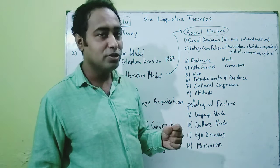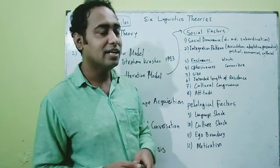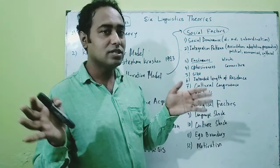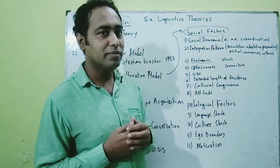The fifth factor is size — the size of the community is also a very important factor. Suppose a learner goes to another community and his home community is very large; then learning becomes unsuccessful. If the size is small — a small group — then learning becomes successful.